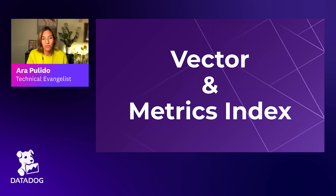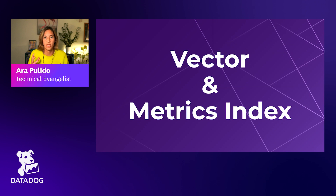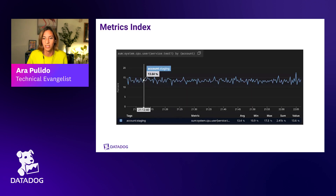After this intro to Rust, let's get real and talk about how we use it on a couple of projects. We're going to talk about Vector, which Brian mentioned, and the metrics index service internal at Datadog. Let's give a little overview of what those projects are about so you can understand the constraints and why Rust was the right choice. Let's start with the metrics index — Duarte, the project you're working on.